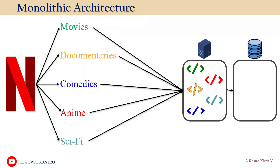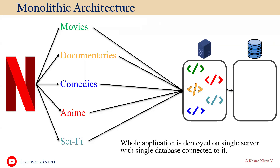In a nutshell, monolithic architecture is where the entire application code is deployed into a single server with a single database connected to it. Everything is available in one single server — that's called a single code base.